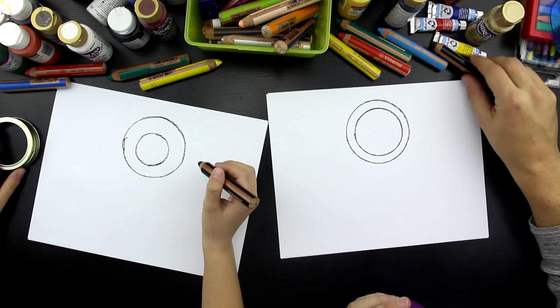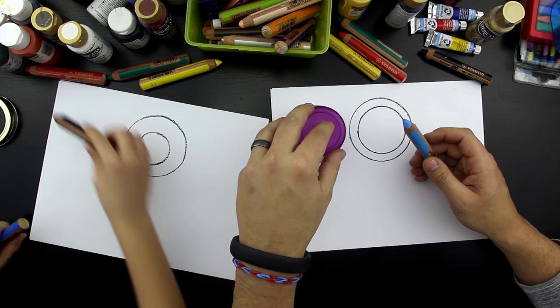First ring. All right, next one. Let's do the blue. That's going to be on the left side. Oh, that's awesome. It's like a donut.